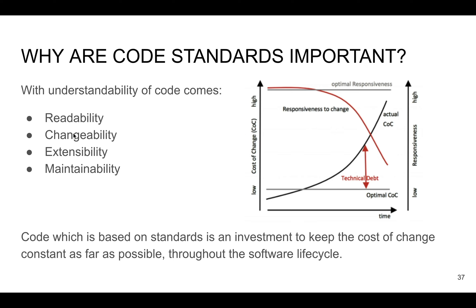Why do we need clean code standards? Let's look at this image showing cost of changes over time and optimal responsiveness. At the beginning we need some additional time — the red line — to implement and follow code rules, conventions, and style. But with time it takes less and less effort, and the code becomes better in maintenance and readability. If we don't follow code conventions, the cost of change increases dramatically in an exponential way because we increase technical debt, the number of functions needing refactoring, and the number of bugs, making the code much more expensive and difficult to maintain.